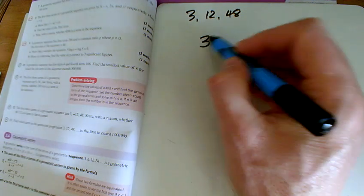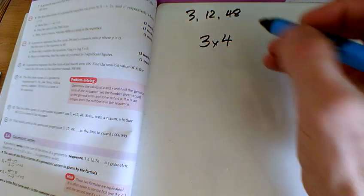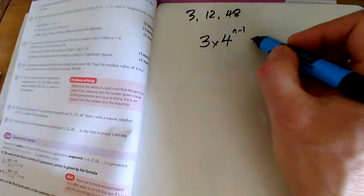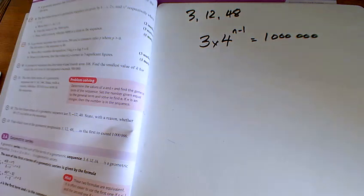So we've got a first term of 3 and a ratio that we're multiplying each time of 4. So 3 times 4 to the n minus 1 is the general term. And we want to know when is that equal to just exceeding 1 million.